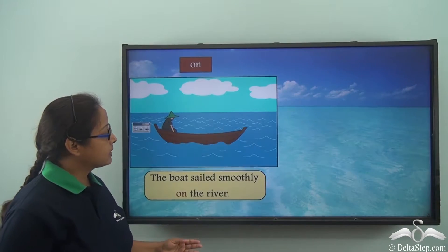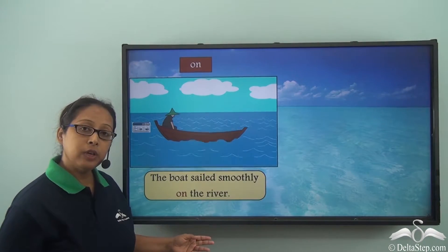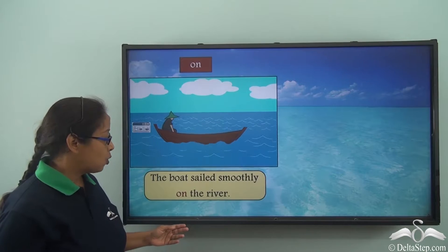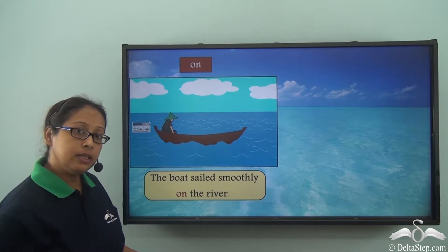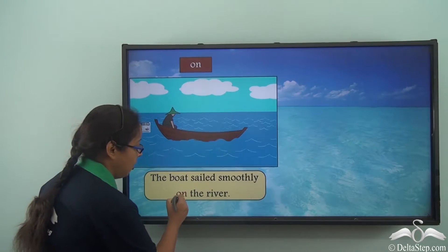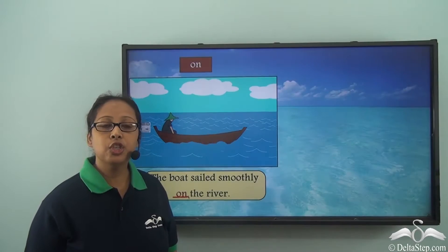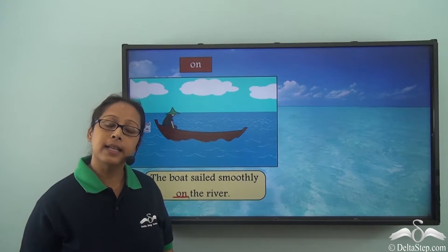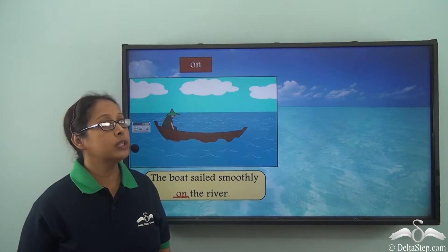The boat sails smoothly on the river. So which is the preposition in this sentence? On. The preposition 'on' tells us where the boat is sailing.